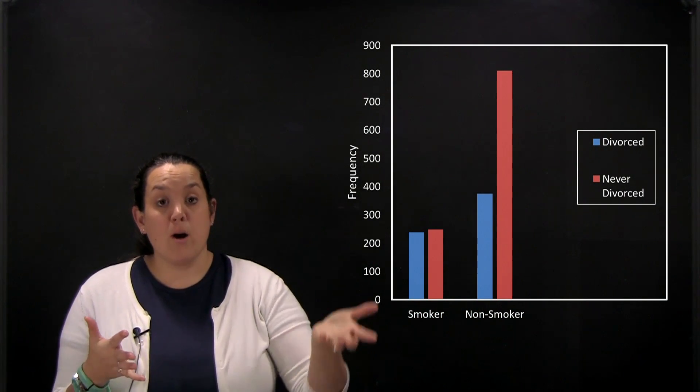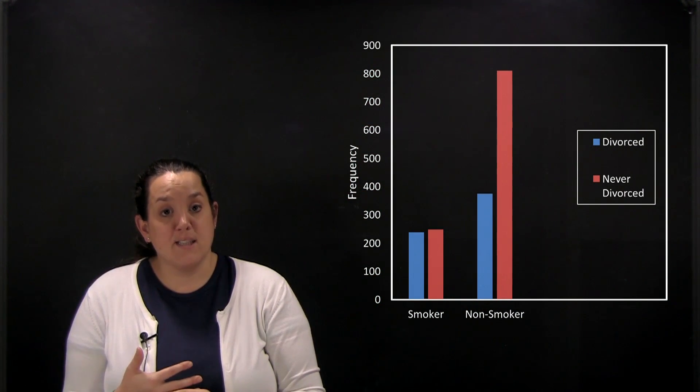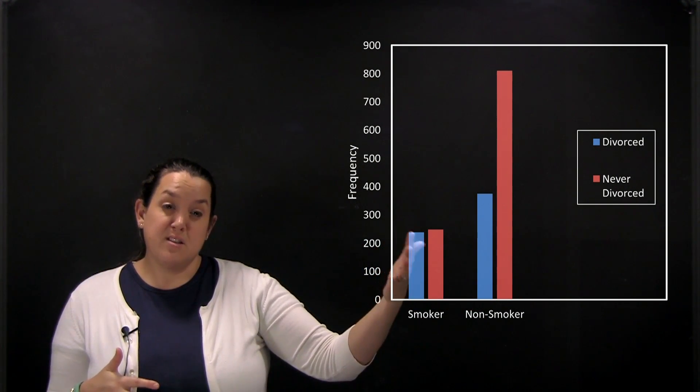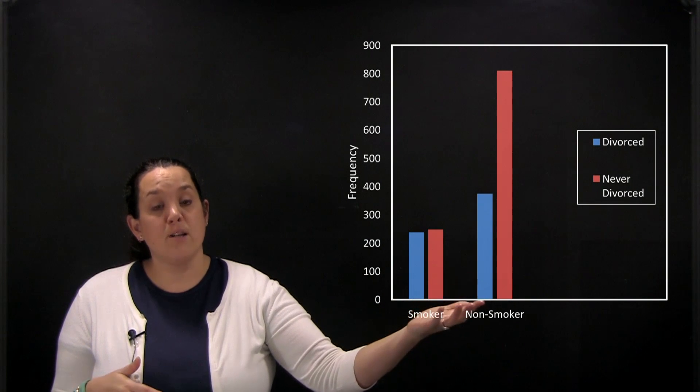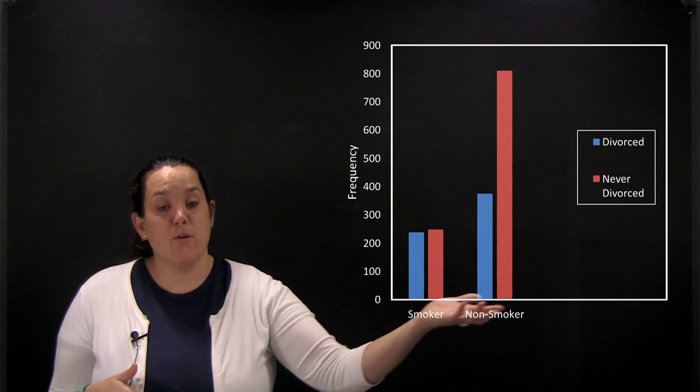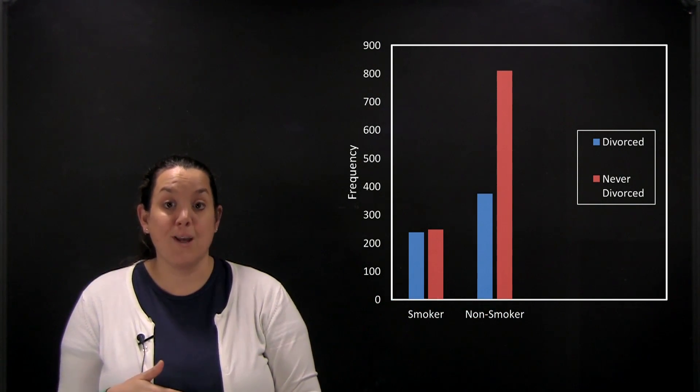The bar graph, just like before, is going to have on the y-axis the different frequencies. Remember that the way that we visually distinguish between a bar graph and a histogram is that a bar graph, the bars don't touch. The reason for that is because the x-axis is made up of different categories.